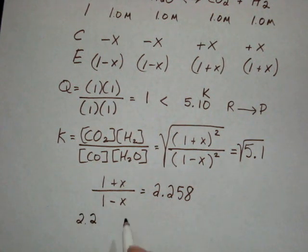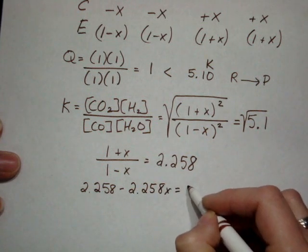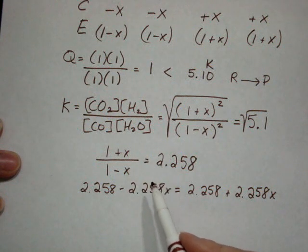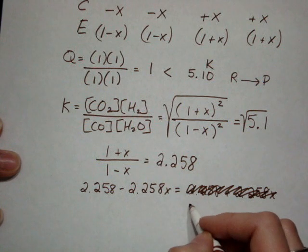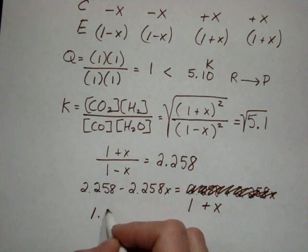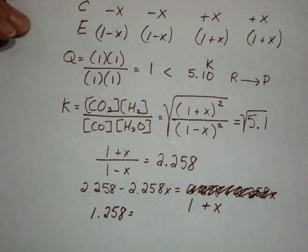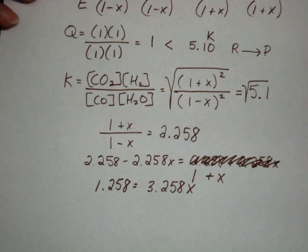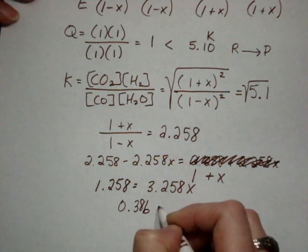which leaves me with 1 plus X over 1 minus X equals the square root of 5.1, which is 2.258. Now I have to cross multiply and solve for X. Wait, I'm silly - cross multiply correctly: 2.258 minus 2.258X equals 1 plus X. Now I solve for X. 2.258 minus 1 gives me 1.258 equals 3.258X. Dividing, I get 0.386 equals X.